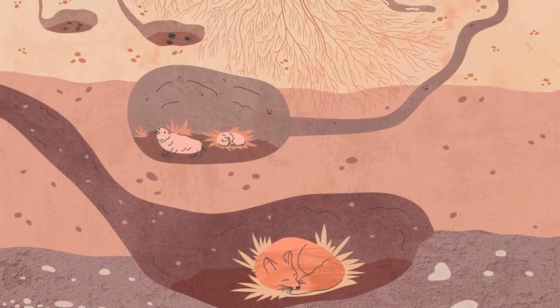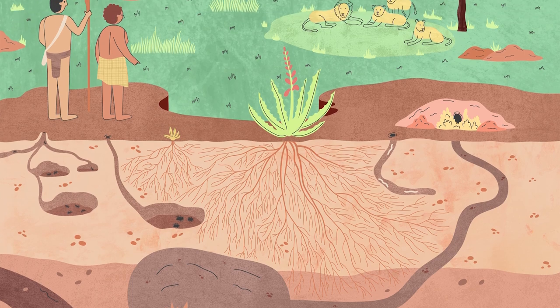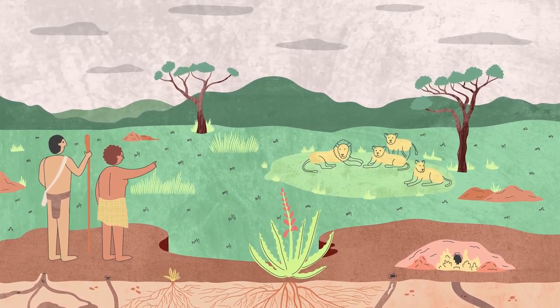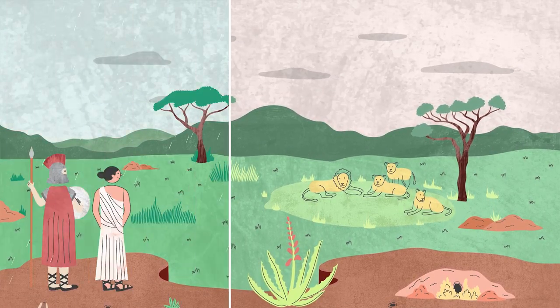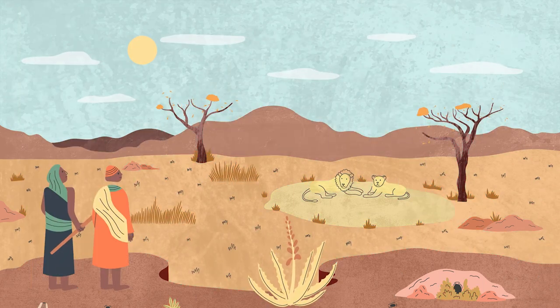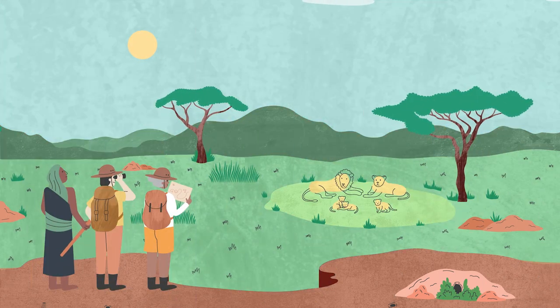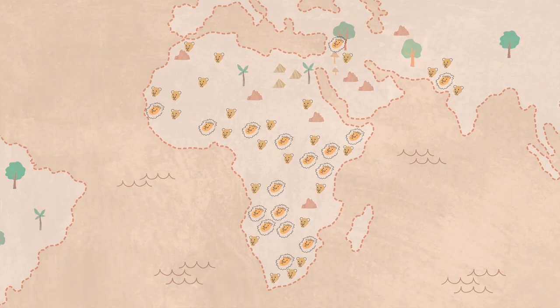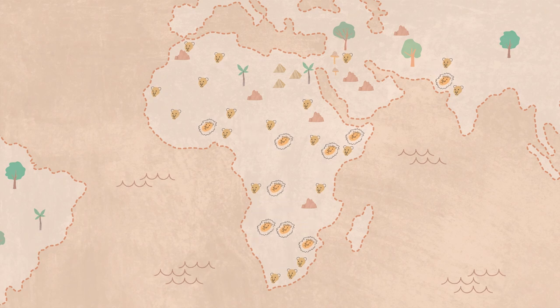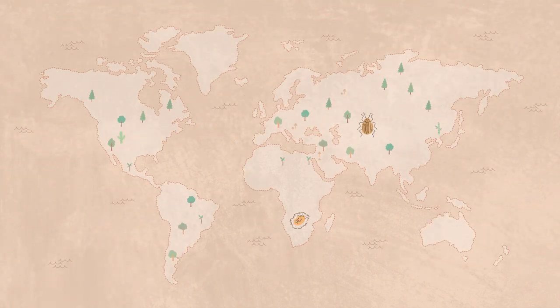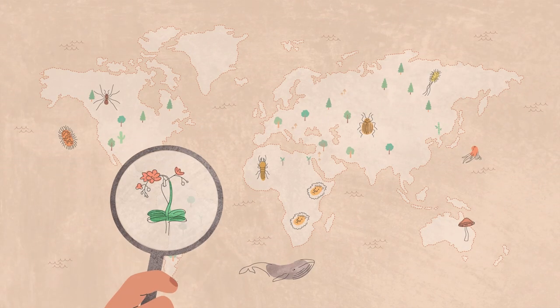Despite centuries of exploration, we humans still often lack basic knowledge about where Earth's species occur. Even the lions, which we've long watched with awe and wonder, are identified as possibly extinct in areas of their historic range in the most recent IUCN Red List assessment. Imagine the situation for species we've observed less closely.